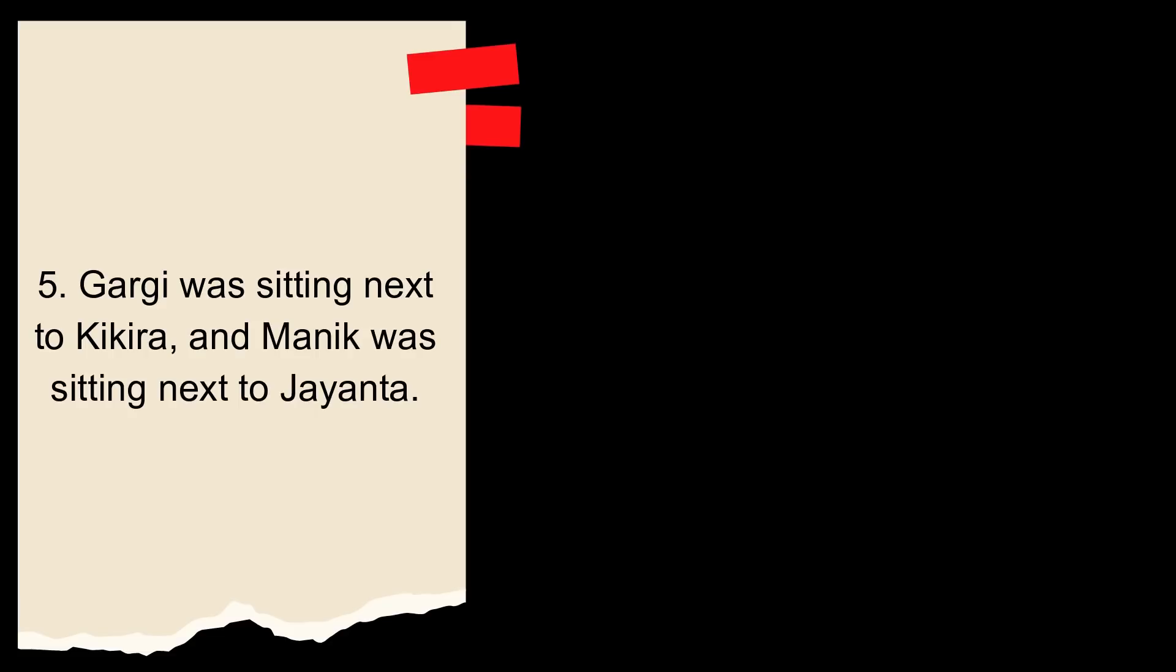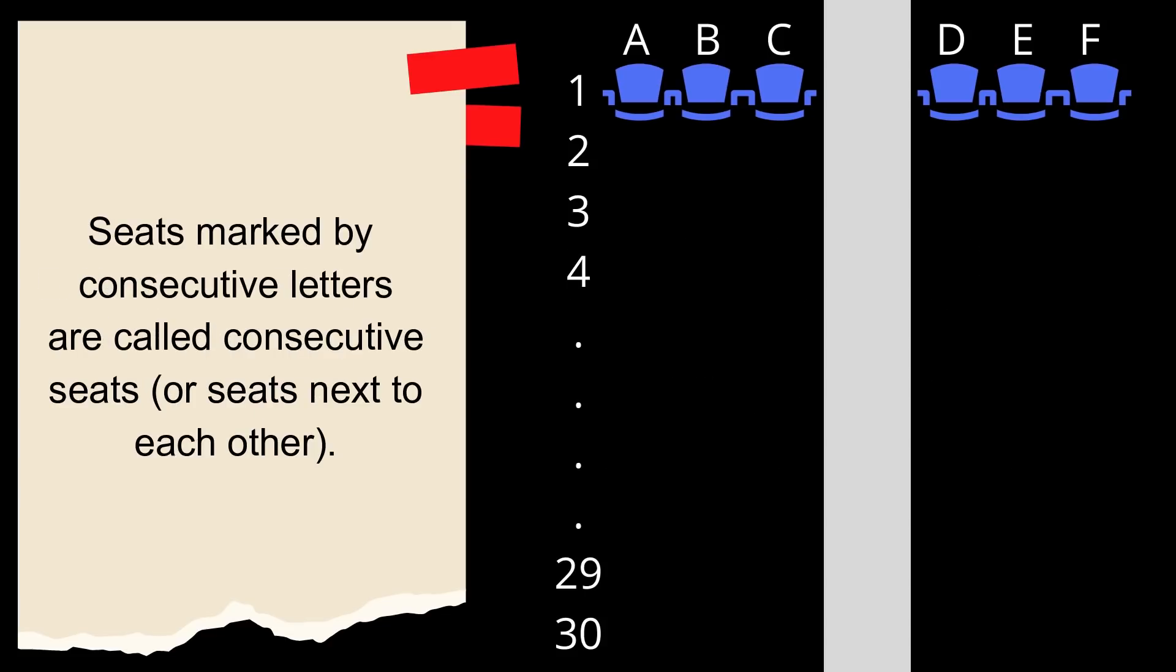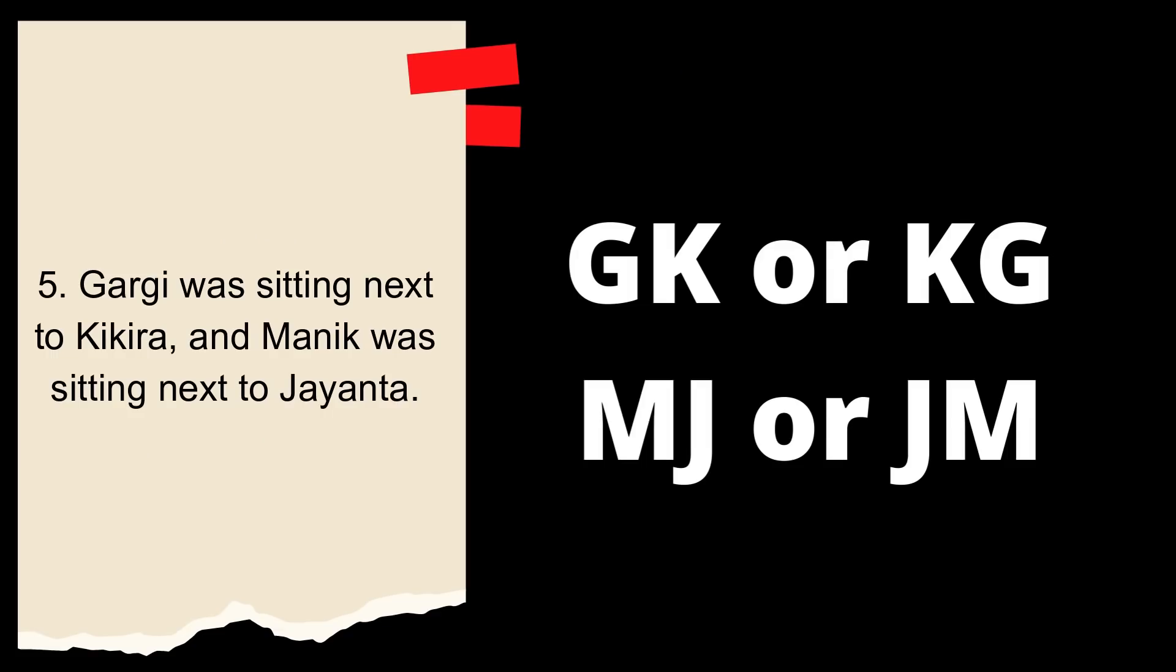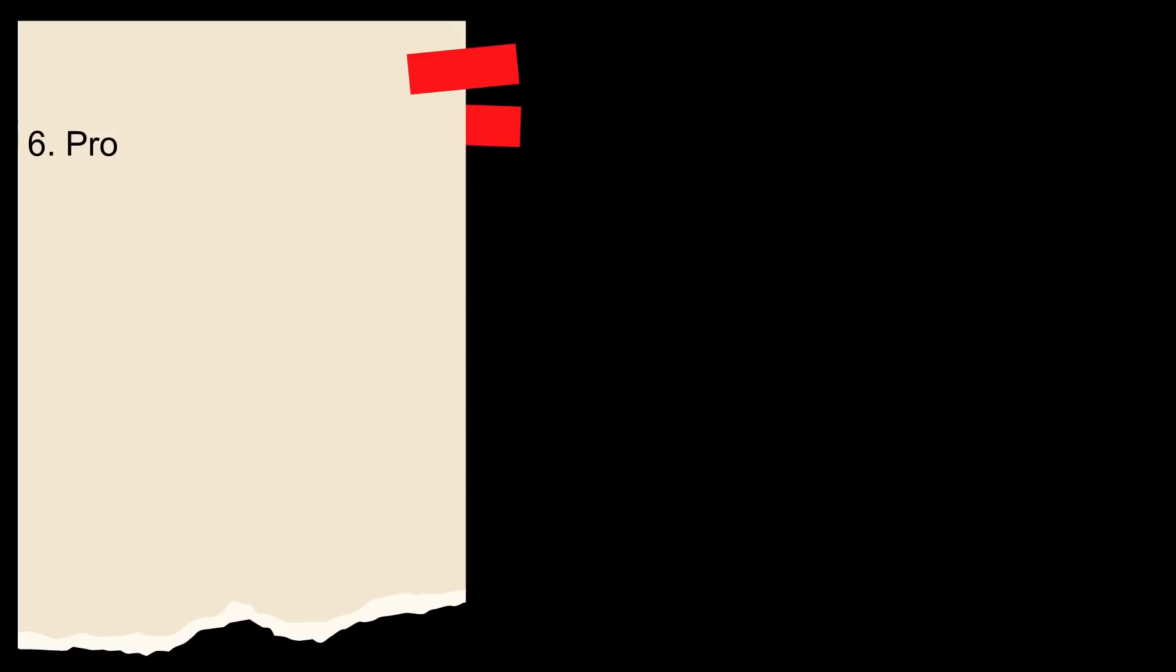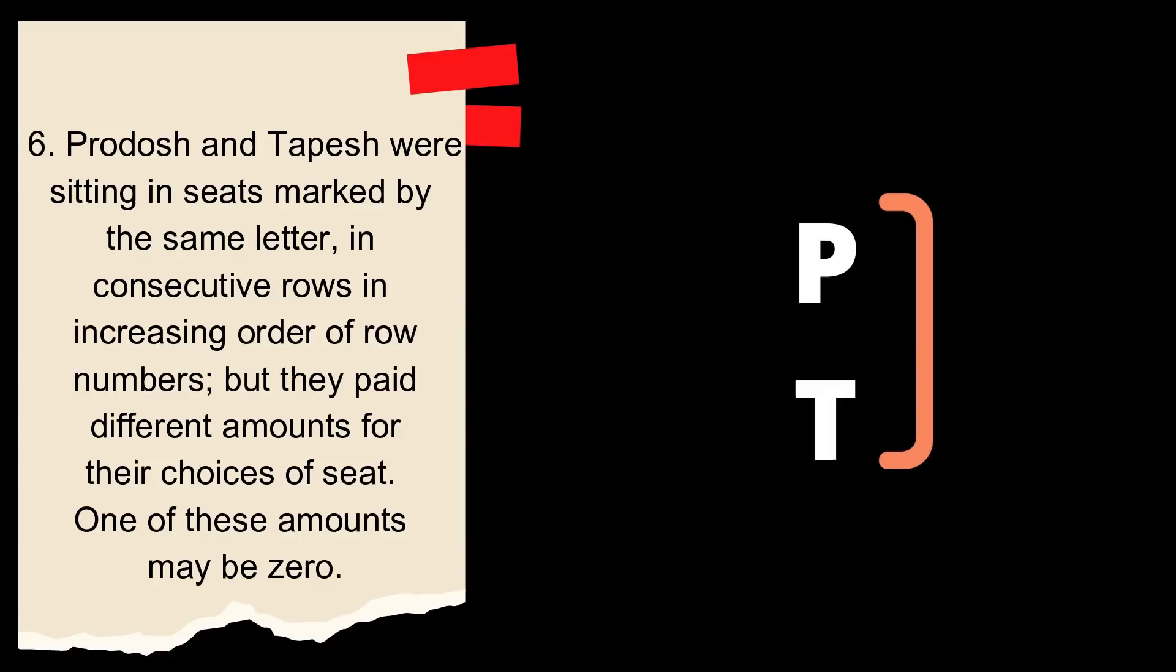Gargi was sitting next to Kikira and Manik was sitting next to Jayanta. Next to means consecutive seats. This is that constraint that has been mentioned in the paragraph above. So, now we know that GK or KG and MJ or JM they are sitting together. Pradosh and Tapesh were sitting in seats marked by the same letter in consecutive rows in increasing order of row numbers. But they paid different amounts for their choices of seats. One of these may be zero. So, these are the six constraints.